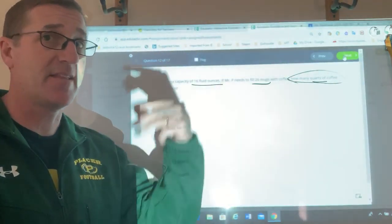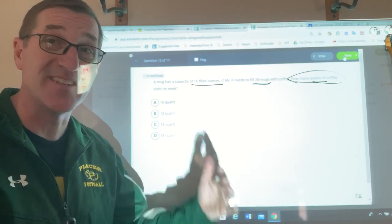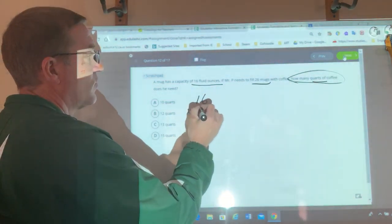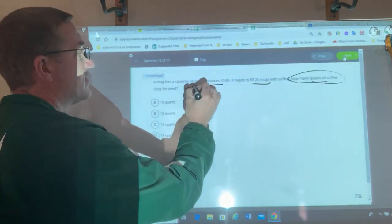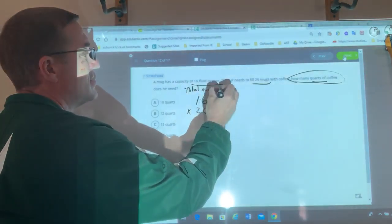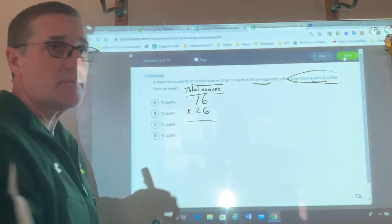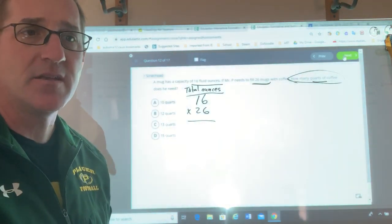If I have three, it's 48, et cetera. If I want to find how many is in 26, I just multiply by 26. So I'm going to take my 16 times 26. This is my total ounces. Okay, so 6 times 6. Go ahead and do this problem, then come back and check with me.